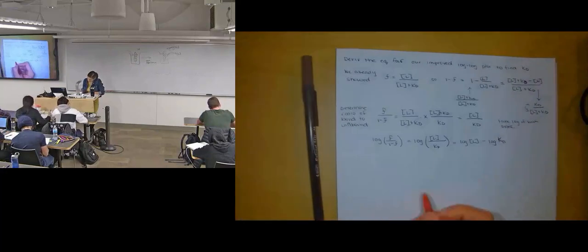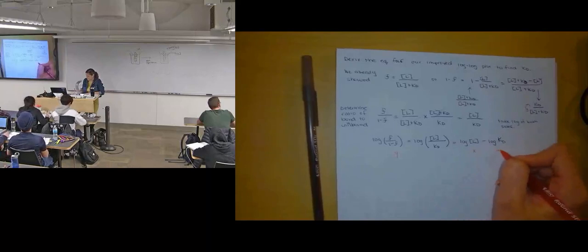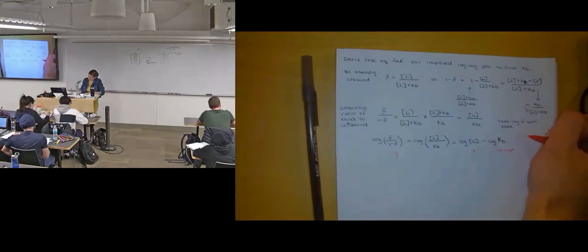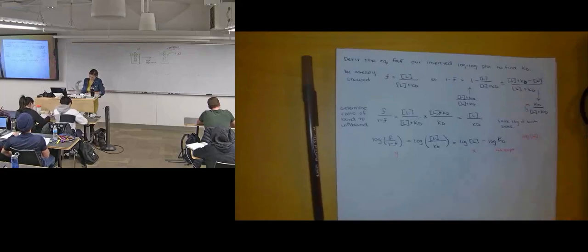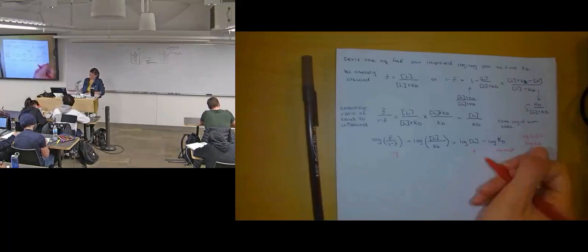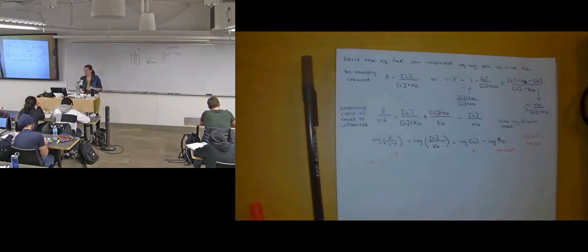And so now what I have is the form Y equals X minus an intercept. I have a linear relationship, which is what I was going for. And when the log of my concentration of my free ligand is equal to the log of Kd, this side will be 0. So this side will be 0. I'll go back to the plot in a second and we'll see that Kd is now where this linear line is crossing the 0 axis.